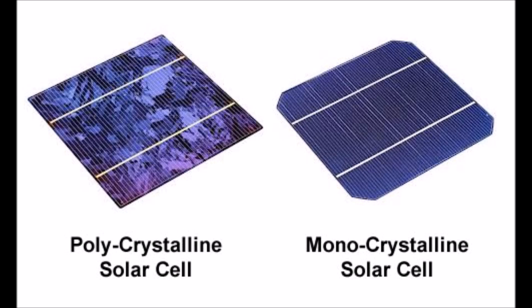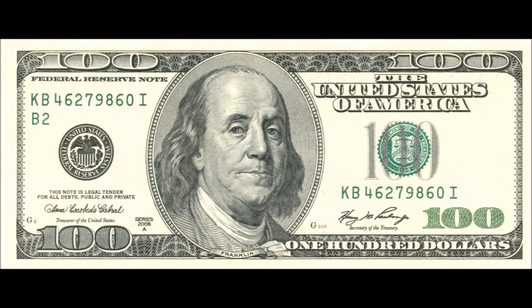The first difference is how the cells are made. Mono cells are made from a single ingot of silicon that is cut into wafers. Poly cells are made from multiple pieces that are melted into one wafer. Poly cells are made with a newer manufacturing process and it is cheaper to make, thus poly solar panels are cheaper than mono solar panels.